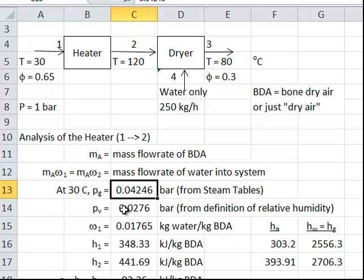So relative humidity is P sub V divided by P sub G. This is the saturation I get from the steam tables. This is the one that's going to tell me the amount of water in the air. So 0.65 times P sub G will give me P sub V.